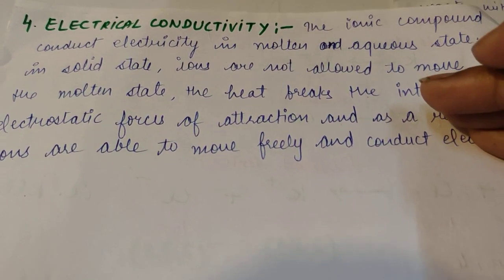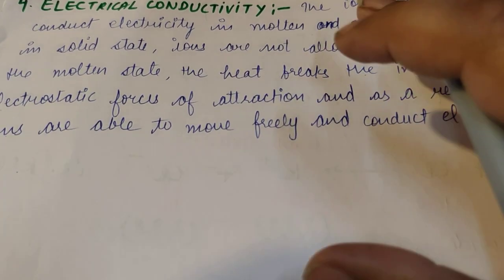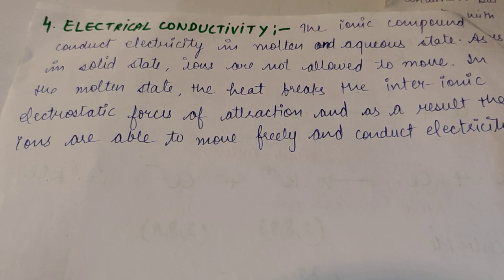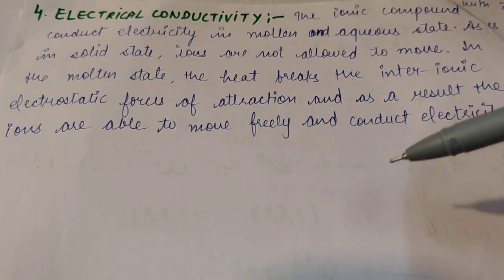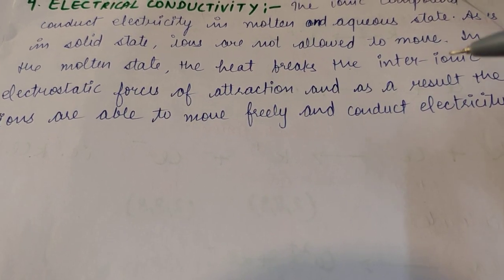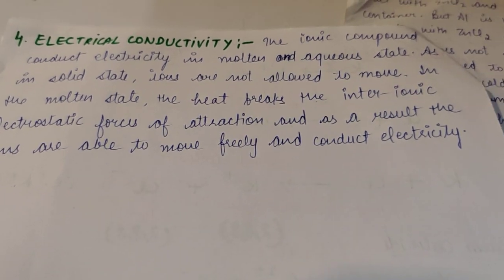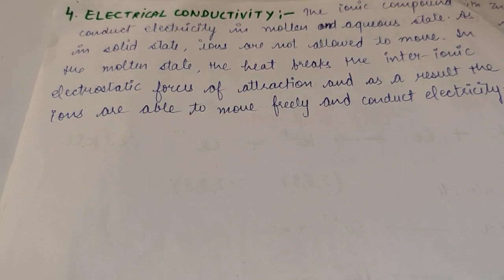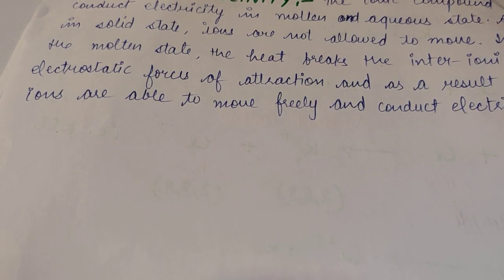But if you increase the temperature, the ionic compounds melt and the ions start moving. If they can move, they can conduct electricity. So ionic compounds do not conduct electricity in the solid state, but they do conduct electricity in the molten state. This finishes the topic of how metals and non-metals react — we've covered the formation and properties of ionic compounds. We'll do the next topic in the next class. Thank you, have a nice day.